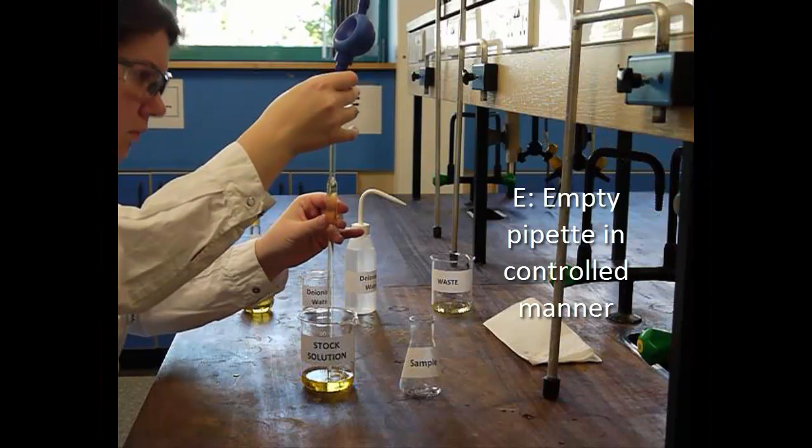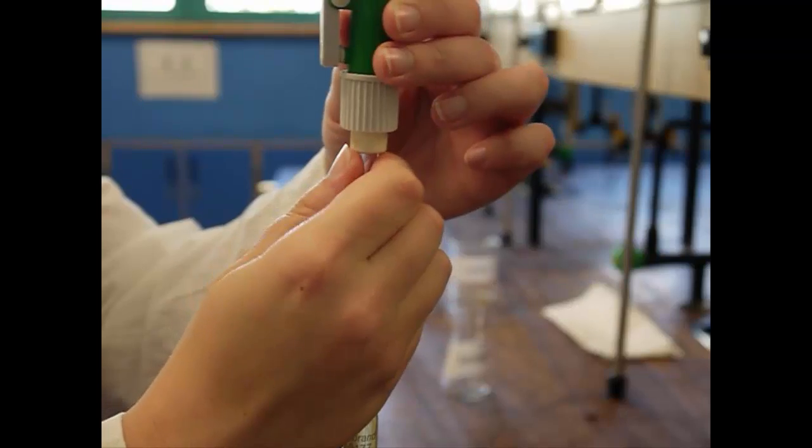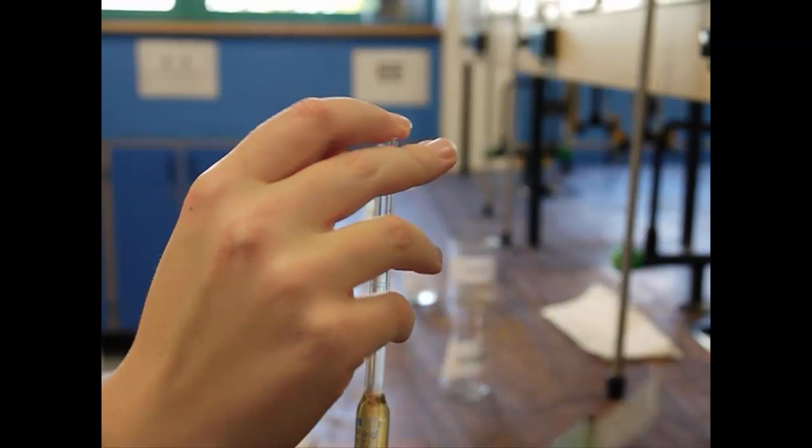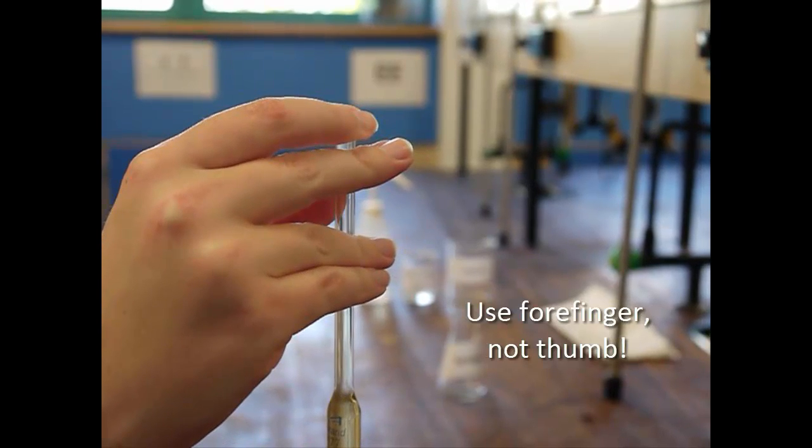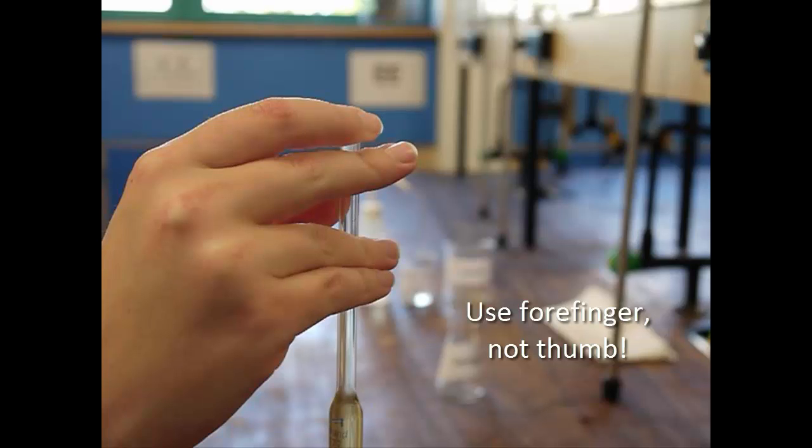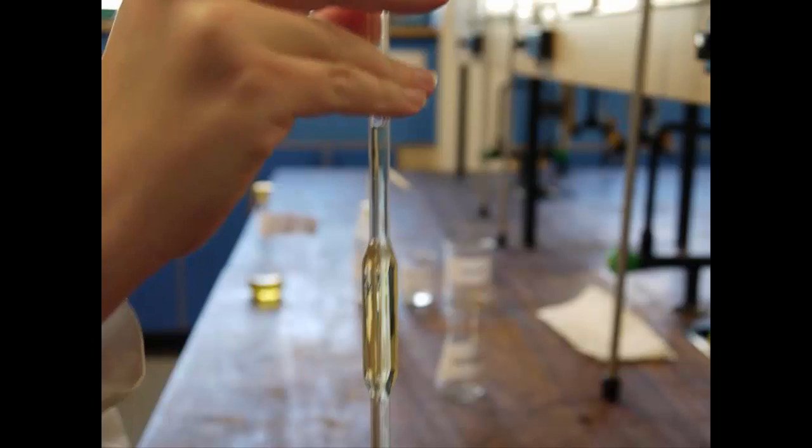If you are using the bulb type filler, you should drain the solution to the graduation mark using the E-valve on the bulb. If you are using the wheel type filler, once the solution is above the graduation mark, quickly remove the pipette filler and place your forefinger over the end of the pipette. Drain to the graduation mark by slowly releasing pressure by moving your forefinger.